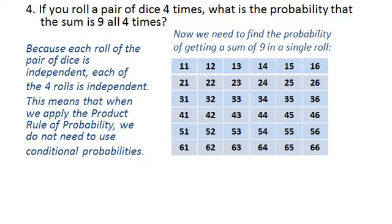But what we do have to do is find the probability of rolling a 9 in a single roll. As you know, I like to write the sample space for a pair of dice sum problem as a 6 by 6 square.